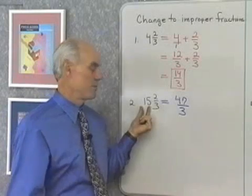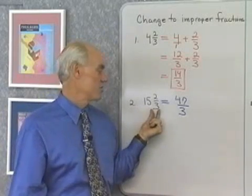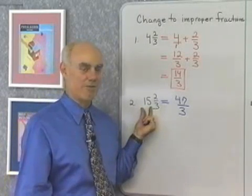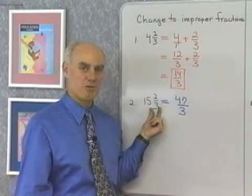47/3. That would be the same as 15 over 1, plus 2/3. 15 is 45/3, plus another 2/3, that would be 47/3.